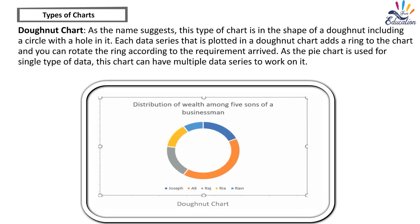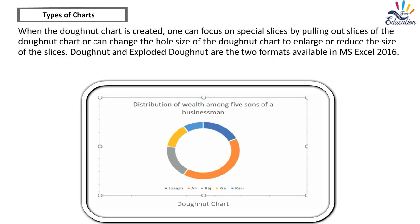Donut chart: As the name suggests, this type of chart is in the shape of a donut — a circle with a hole in it. Each data series plotted in a donut chart adds a ring, and you can rotate the ring as required. Unlike a pie chart which is used for a single data series, the donut chart can have multiple data series. You can focus on special slices by pulling them out, or change the overall size of the donut chart to enlarge or reduce the slices. Donut and exploded donut are the two formats available in MS Excel 2016.